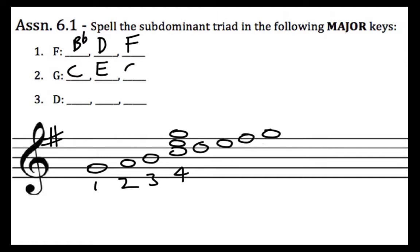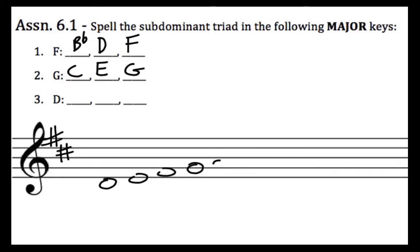And one more: the key of D, which is two sharps. So we're going to add a second sharp here and spell our D scale: D, E, F sharp, G, A, B, C sharp, and D. The fourth scale degree is G, so we build a snowman on top of G. We get G, B, D, and there you have it.